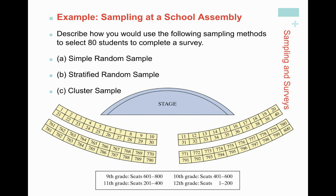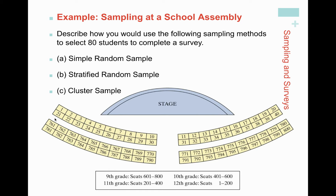Here's an example that summarizes all of that. Let's say there's a performance or school assembly. There's a stage, and then rows of seats numbered 1 through 10, then 11 through 20, with a middle aisle — so 20 seats per row. There are 800 seats total. The 9th graders sit in the back, seats 601 to 800. 10th graders get 401 to 600. 11th graders get 201 to 400. And the seniors sit in the very front, seats 1 to 200. How would we take an SRS of size n equals 80? Notice that 80 is one-tenth of 800 — about 10%.